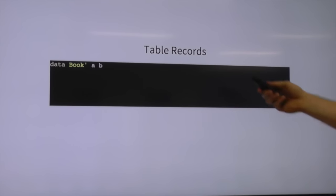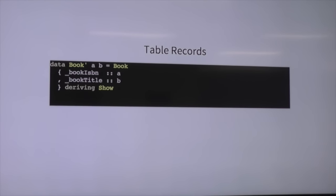We want to start off with this thing here: we have a book, and we know it has two columns. This is probably the weirdest part about Opaleye — you define all your data types with these little type parameters, and we'll start making sense of that later. So we're making a book with two columns: an ISBN to identify it, and a title. Pretty basic. And then we want some `makeLenses` because lenses make Opaleye even more awesome.